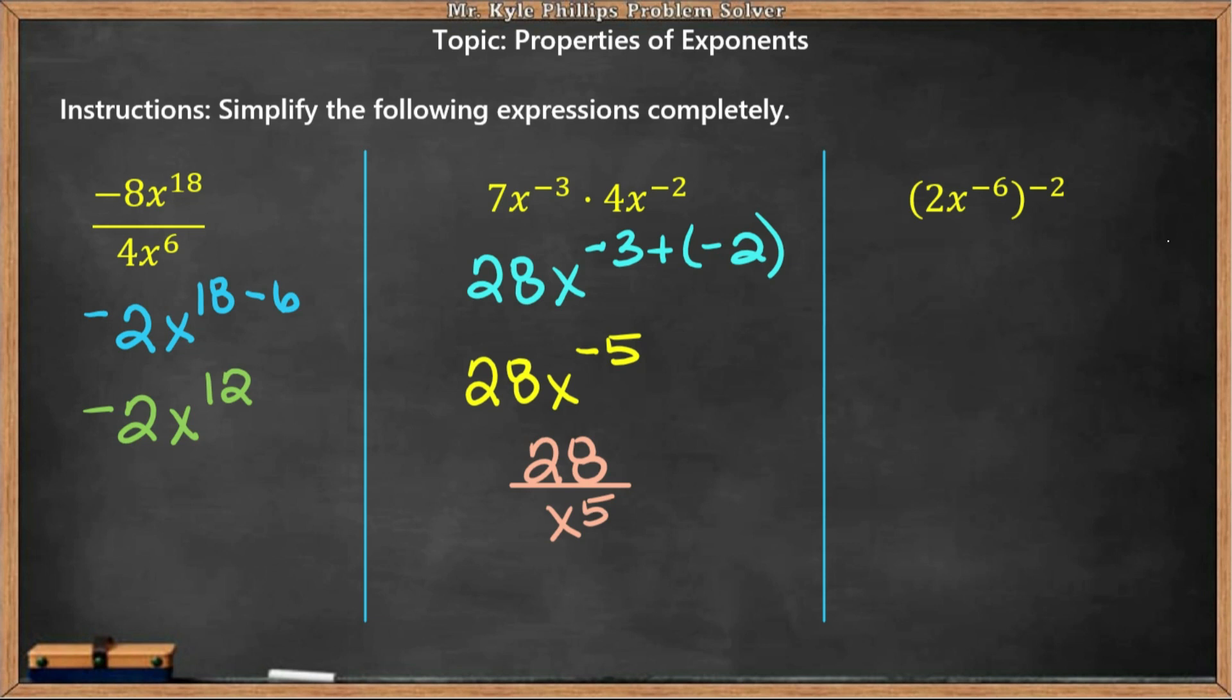All right, so with our third example here, our power rule, this -2 is going to go to every value inside the parentheses. So this -2 is going to go to the 2, and this -2 is also going to go to the x to the -6.